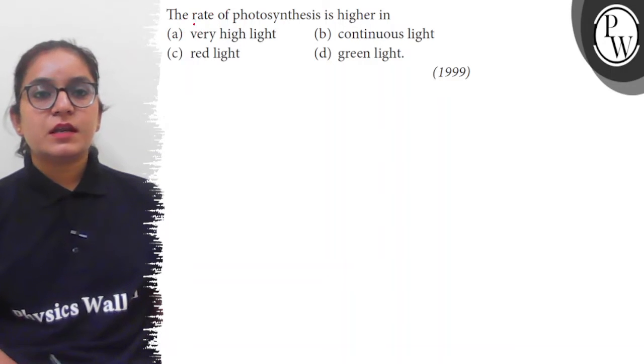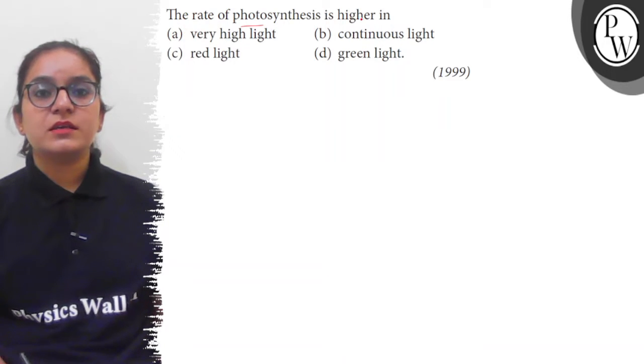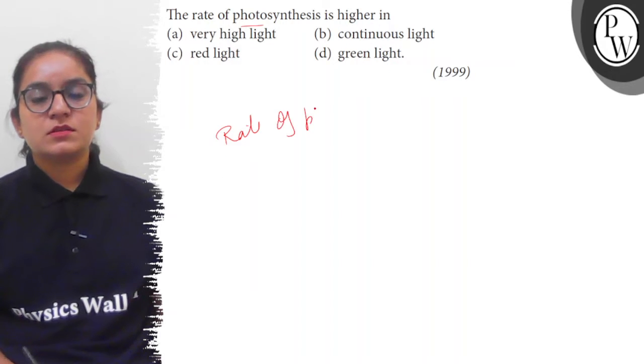Hello students, the question is: the rate of photosynthesis is higher in (a) very high light, (b) continuous light, (c) red light, or (d) green light. So as we know, the rate of photosynthesis